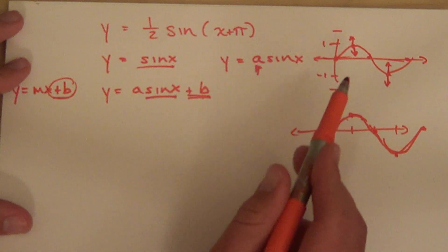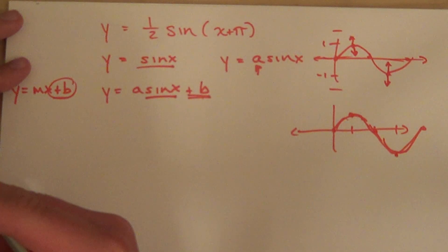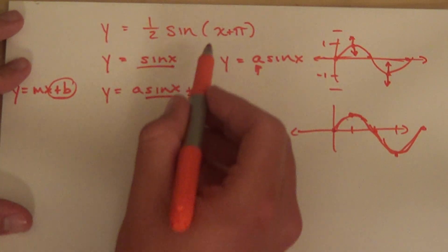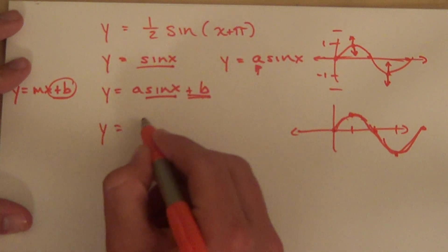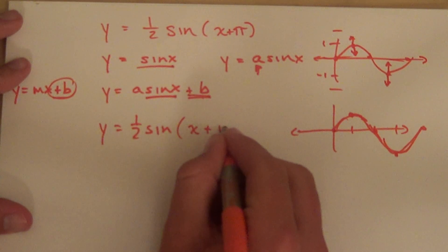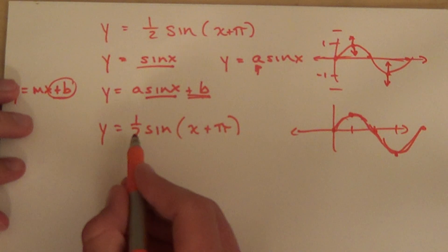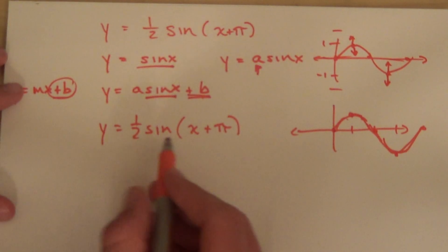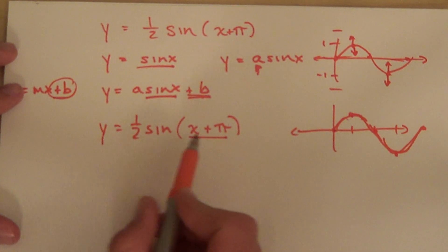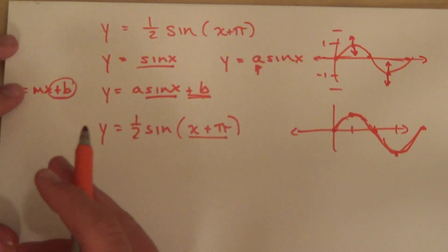The amplitude just stretched how high the wave goes; the vertical shift moved it up or down. The only way to alter the starting point is to alter the actual function itself. So here, y equals one half sine, and now instead of just being x, I'm going to alter the function to be x plus pi. This one half doesn't alter the starting point, but because I've altered the actual original function, it's now going to alter my starting point.